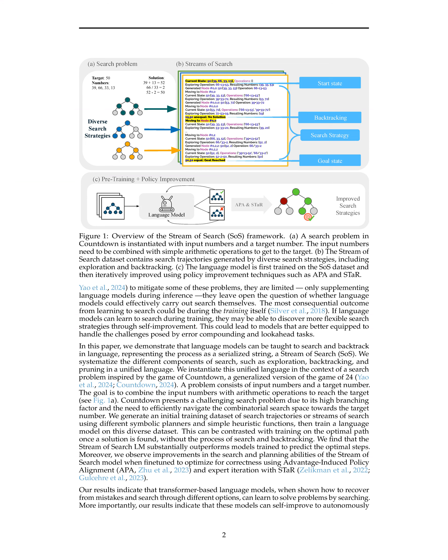By systematizing the elements of search into a unified language, the paper enables language models to learn to solve problems through exploration and error, allowing them to make mistakes, search, plan, and backtrack. This approach exposes models to the messy process of problem-solving, leading to self-improvement through optimizing for correctness using Advantage-Induced Policy Alignment (APA) and Expert Iteration with STAR.